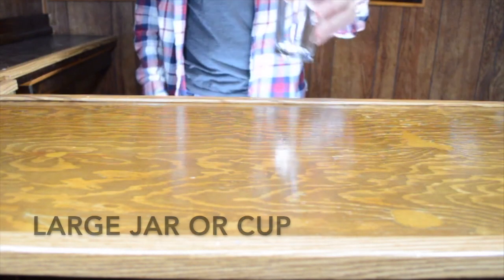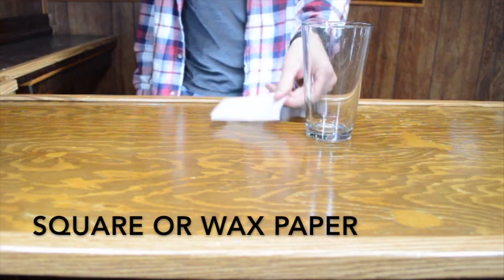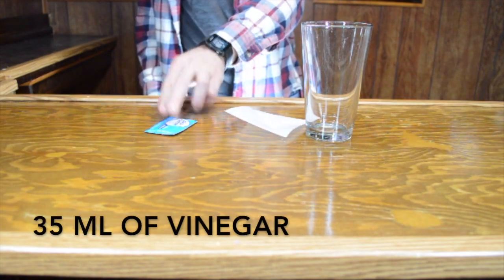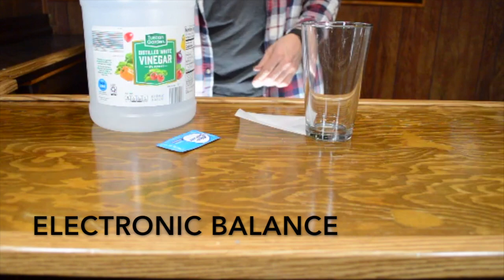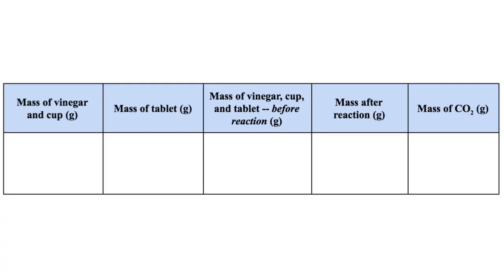Here's the materials that we'll need for this experiment. A large jar or cup, a small piece of wax paper or parchment paper, one effervescent tablet, 35 mils of vinegar, an electronic balance, and a 100 mil graduated cylinder. We're going to record the data in a data table that looks like this.